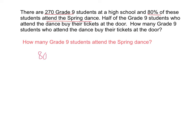We know that 80% of the total number of students attend the dance, so 80% of 270 students attend the dance. But what does that mean? What is 80% of 270? I'm going to show you one method of solving this. We're going to do this by using fractions. So let's represent 80% as a fraction. Percent is always out of 100, so if you have 80%, that means you have 80 out of 100.